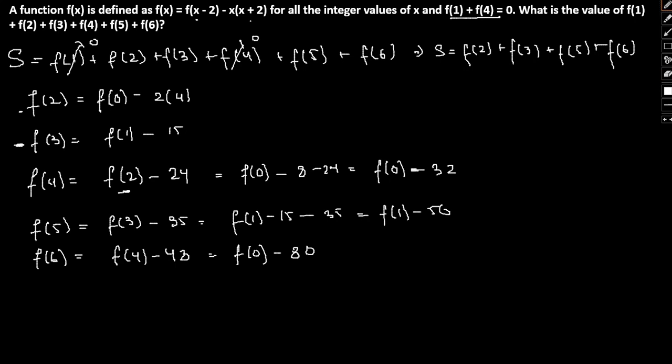Now as we know we have all these values as such, I am going to substitute all these values in this particular equation of S. So what we have here if we substitute the same, we get S = f(0) - 8 + f(1) - 15 + f(0) - 32.